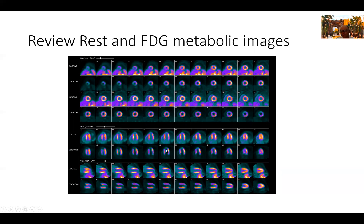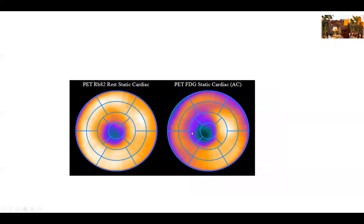Had we been dealing with a situation of hibernation, you would see a mismatched defect where you have a defect in the apex picking up FDG in the metabolic images. This is not the case here. This is scar myocardium. You can see a perfectly matched defect in the apex. You can see it here displayed on the 17-segment model.